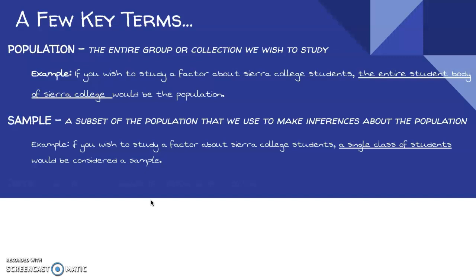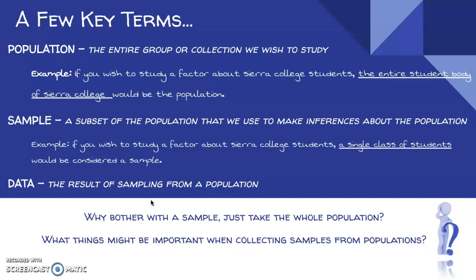Data is the word we're going to throw around a lot. Really, it's just the result of sampling from a population. So it's the things that we write down and tabulate and work with. Two things to think about here: Why would you bother with a sample? Why not just take the whole population? Can you think of any reason why a sample might be required or beneficial? And what things might be important when collecting samples from a population? Can we just go about sampling in any way that we choose? Is there anything we need to consider? Think about the Sierra College students example. Would there be a right way to sample from the Sierra College student body? Would there be a wrong way?